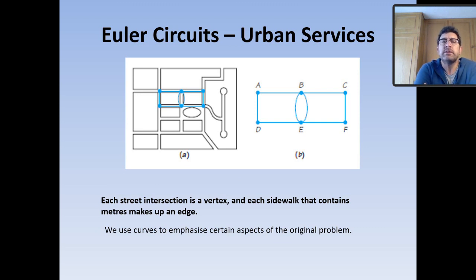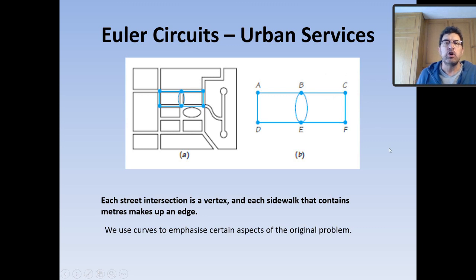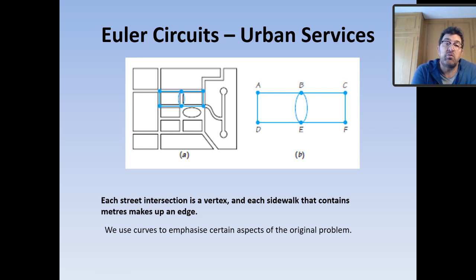If we look at the graph I have here, this is a particular section of a block in a suburb. On either side of this block we might have various features — here's a park where children play. We can turn this into a graph representation where every vertex represents where two roads intersect, and where edges are duplicated it means we go along one side of the road and then walk back on the other side.